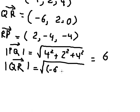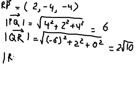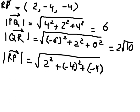For the next side, we put negative six to the power of two and so on inside the square root. We calculate this and get two times the square root of ten. For the last side, we have two squared plus negative four squared plus negative four squared, and we get six.